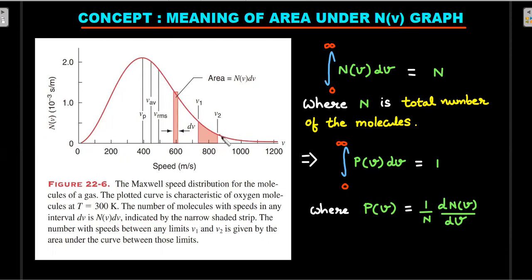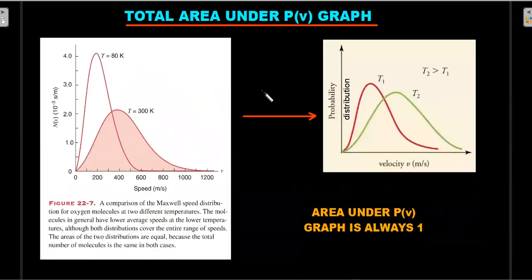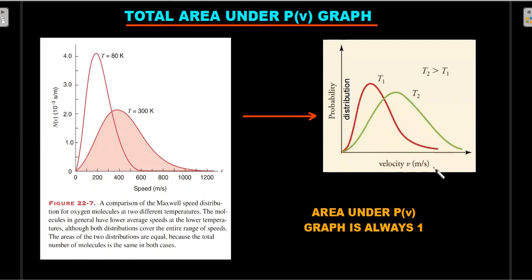Since all these areas sum up to the total number of molecules, you can define a new function: the fraction of molecules having speeds between v and v+dv. That fractional quantity is related to the probability distribution. If N(v) is given, the area under that curve equals N. Converting to a probability distribution P(v) by dividing by N means the sum of all probabilities equals one. So the total area under the P(v) graph always equals one at any temperature.